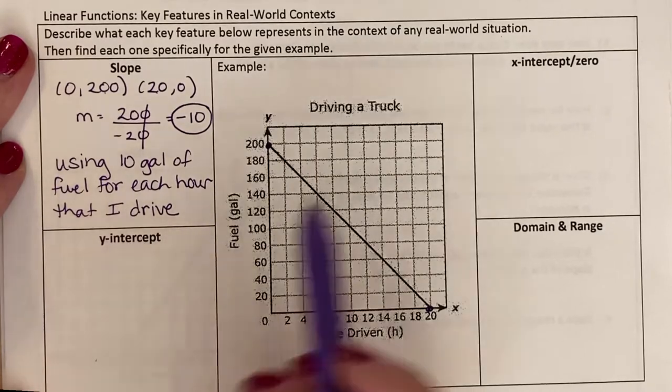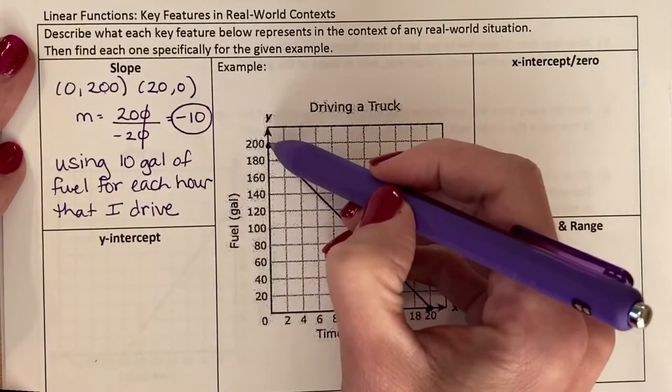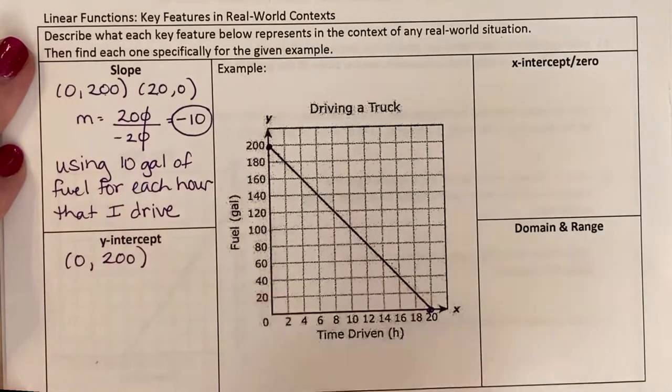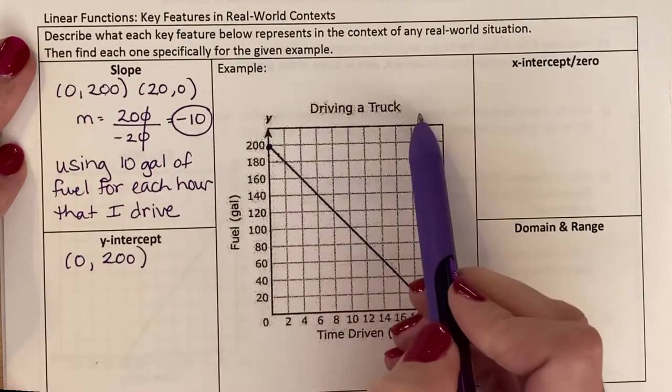What about the y-intercept? Where does it cross the y-axis? It crosses at 200, so it would be (0, 200) or just 200. And again, what does this mean for driving a truck?